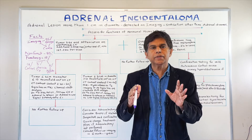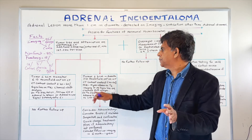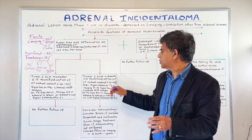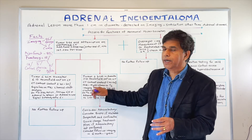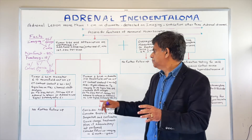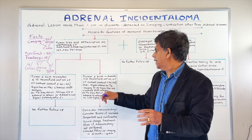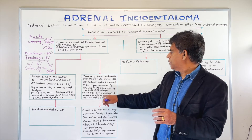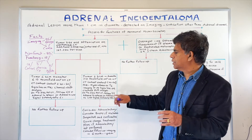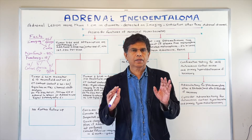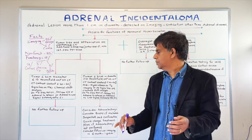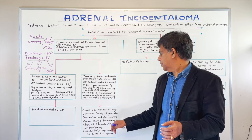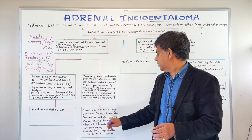Hounsfield units greater than 10 — most likely could be tumor. CT contrast washout less than 40% — you have to worry about a tumor. On MRI, hyperintense on T2 imaging or no signal loss — that's also characteristic of cancer. You also look at chemical shift analysis or 18F FDG PET CT with SUV max greater than 5, and adrenal-to-spleen or adrenal-to-liver signal intensity greater than 1. Those are red flags — you have to do something. Consider laparoscopic adrenalectomy.